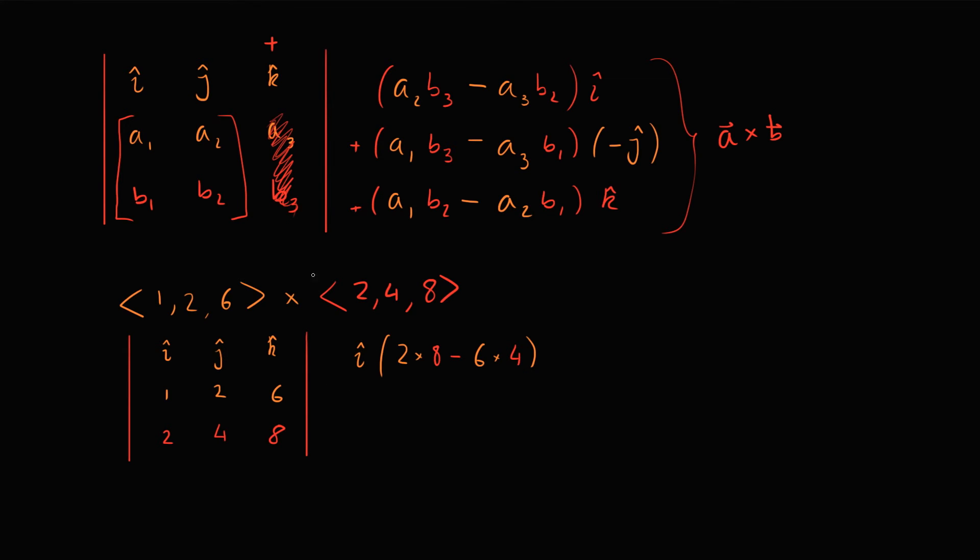For J hat, we need to remember that it's a minus J, and we're going to be multiplying this by 1 times 8 minus 6 times 2. And lastly, for K hat, we're going to be doing 1 times 4 minus 2 times 2.